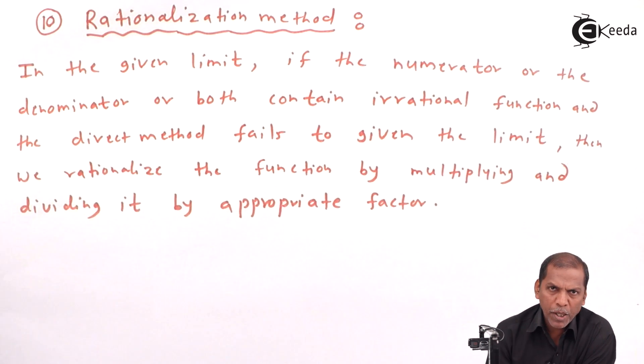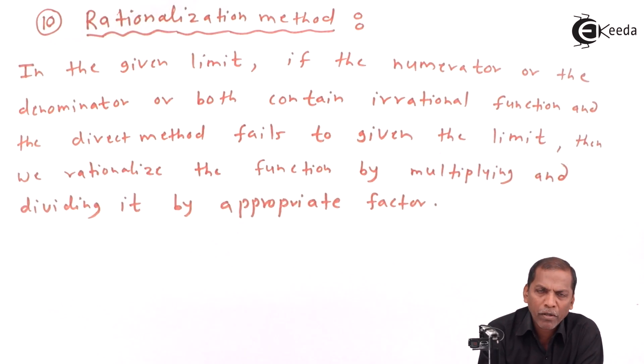Hello friends, now we see subtopic 10, rationalization method, of chapter limit.